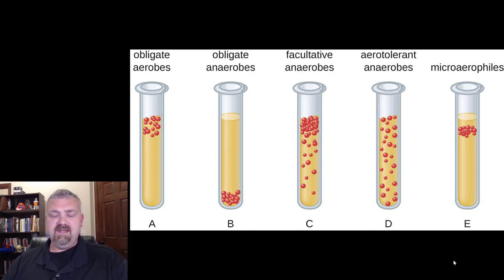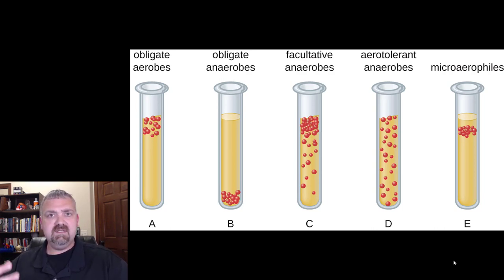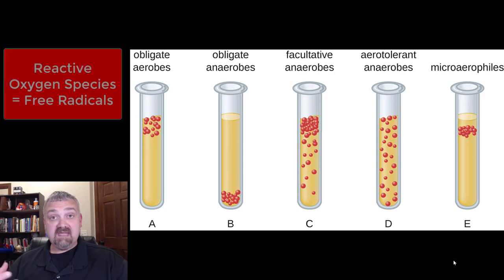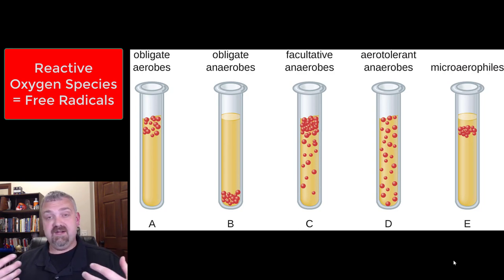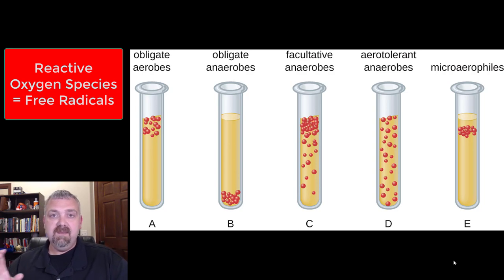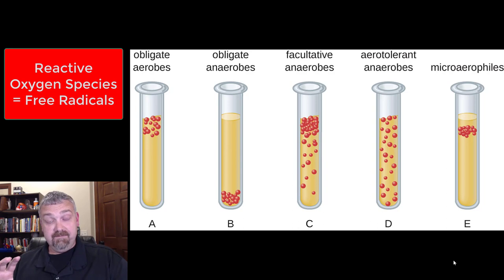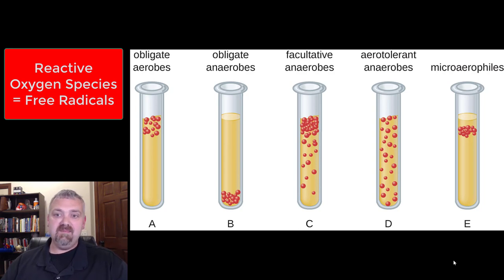The first thing I want to start off with is: oxygen is poisonous. Oxygen is toxic — it leads to reactive oxygen species, which is a fancier way of saying free radicals that you've probably heard of. Oxygen causes things to rust, it causes your fruit to brown, it causes the same things to happen inside of us. So oxygen is toxic, but an organism like you and me can deal with oxygen because we have systems in place to neutralize its harmful effects.